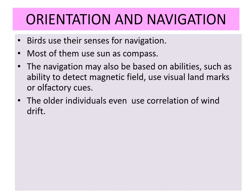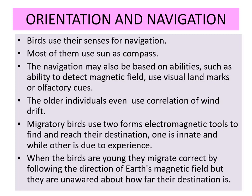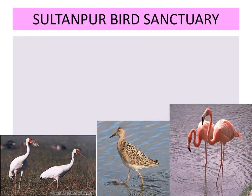Older individuals even use correlation of wind drift. Migratory birds use two forms of electromagnetic tools to find and reach their destination — one is innate and the other is gained through experience. When birds are young, they migrate correctly by following the direction of Earth's magnetic field, but they are unaware of how far their destination is.